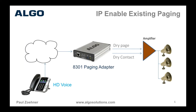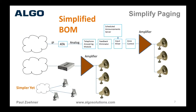You could install an ATA and a telephone answering module, but that's a fair amount of equipment, and as you'll see in a few slides, you also lose some audio quality. This is where the Algo 8301 was really intended — the application it was specifically designed for. On the left side we have a POE IP interface, whether SIP or multicast, to the network. It's administered through a web interface, and on the right side we emulate the dry page port from the old phone system.